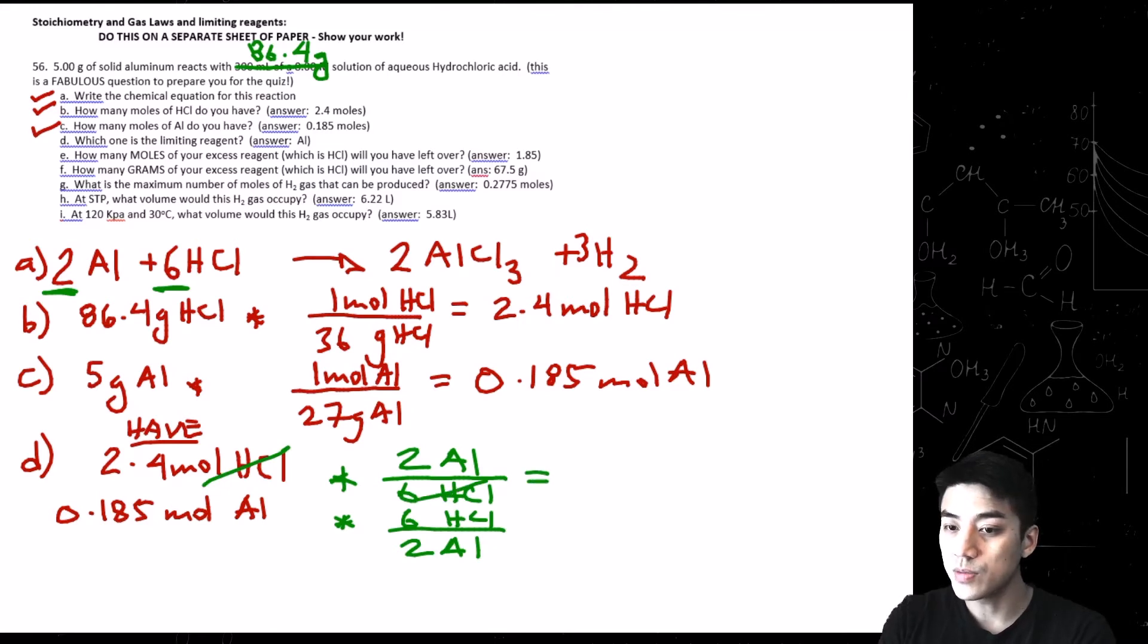So 2.4 times 2 divided by 6. Notice how the HCls would cancel out, and that's what we want. We want to get into moles Al, and this will be 0.8 moles of Al. And over here, we're going to write the word need. So everything under this column tells you what you actually need for this reaction, and it's going to allow you to cross-compare. You'll see in just a moment. But again, it's just review.